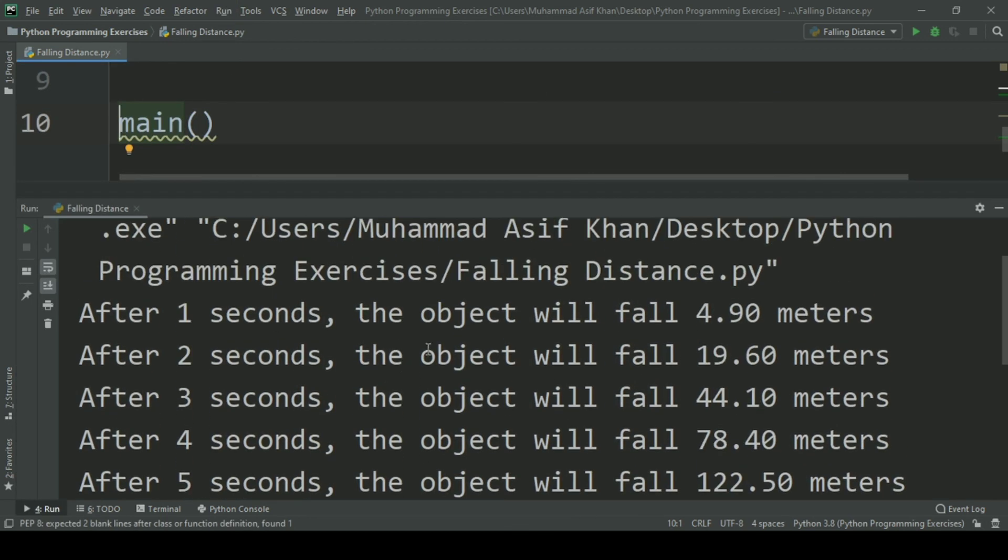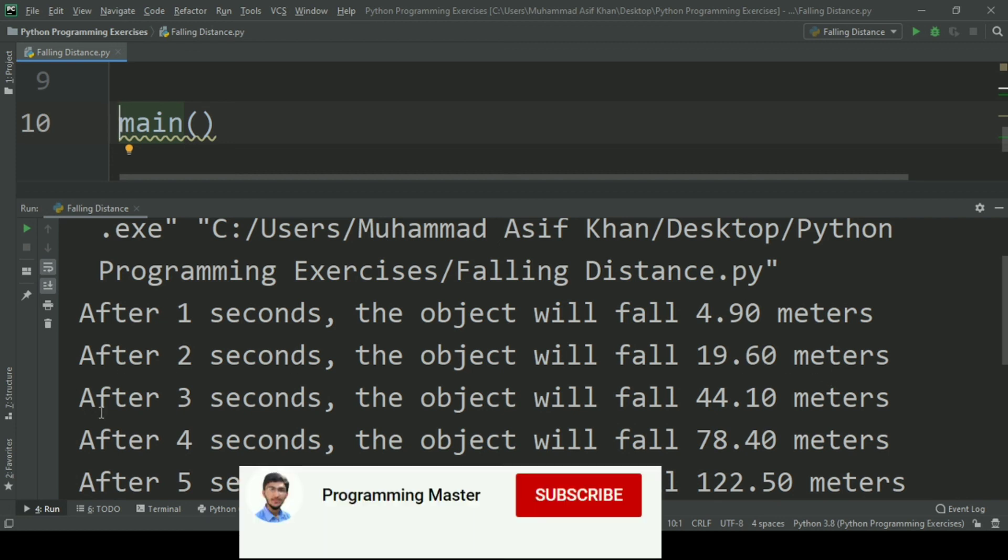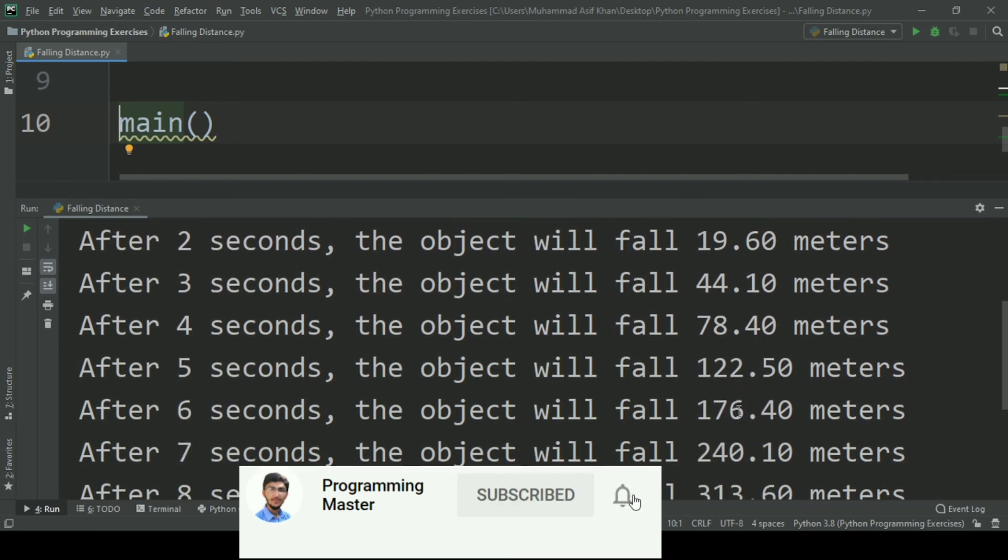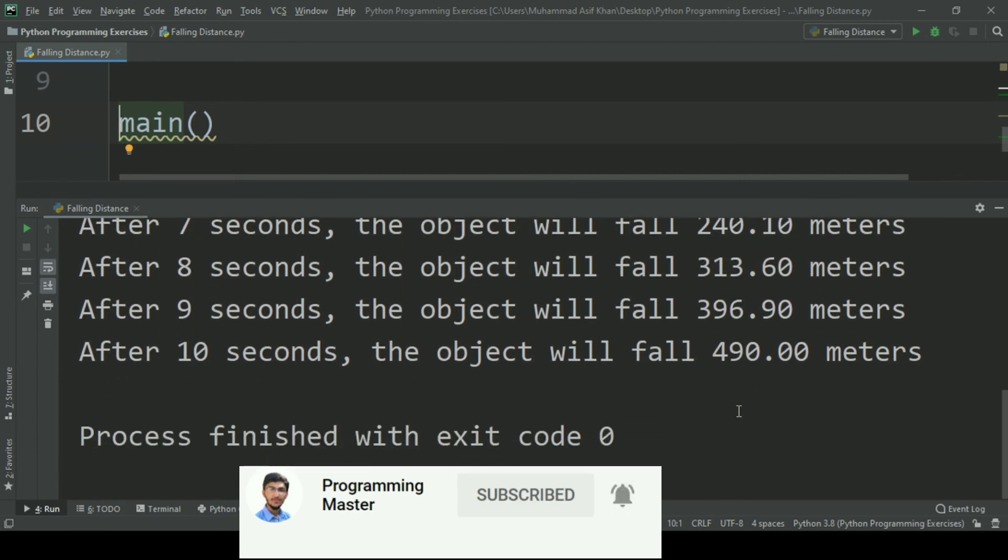It displays: after one second the object will fall 4.90 meters, after two seconds 19.60 meters, after three seconds 44.10 meters, and so on.